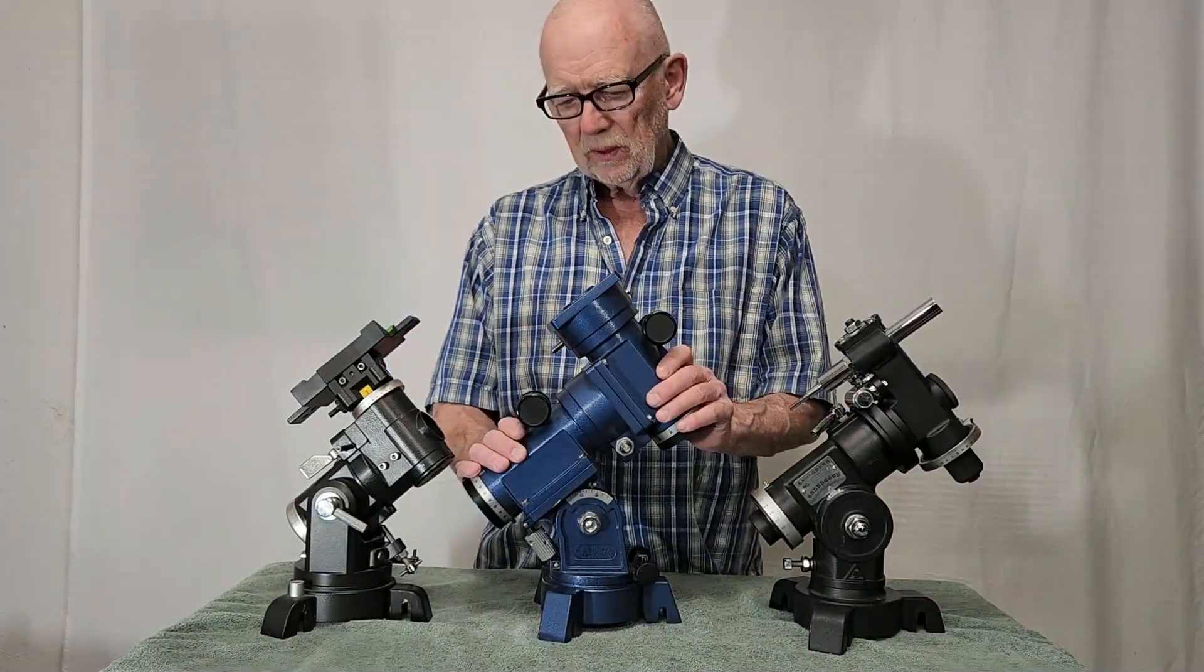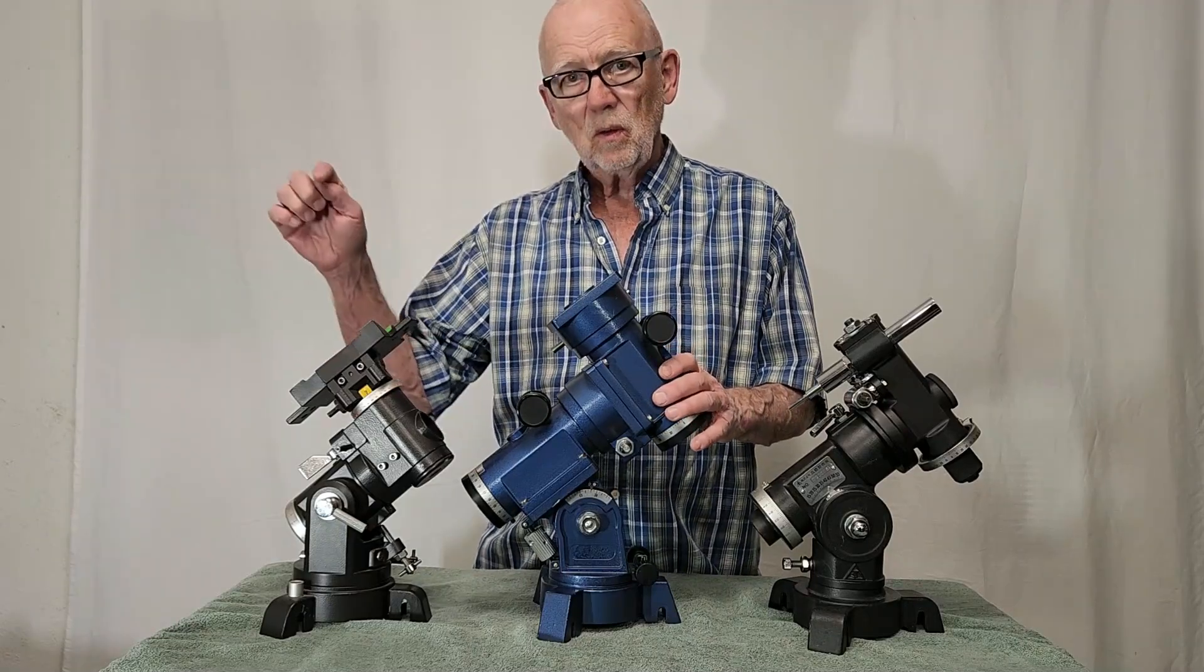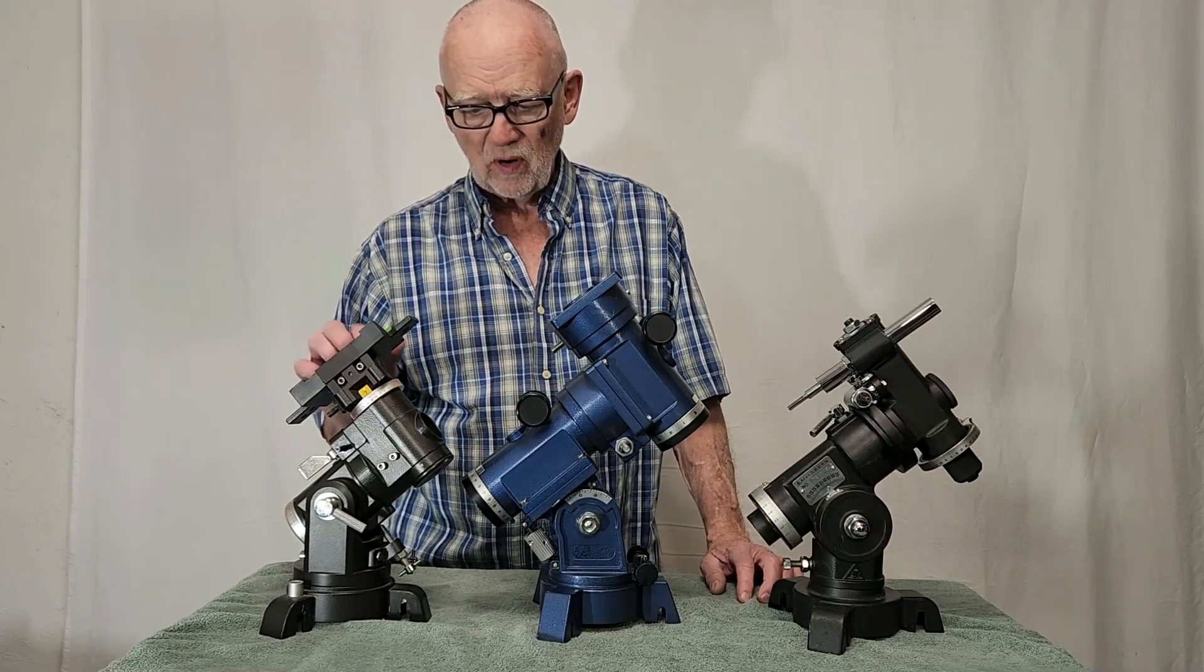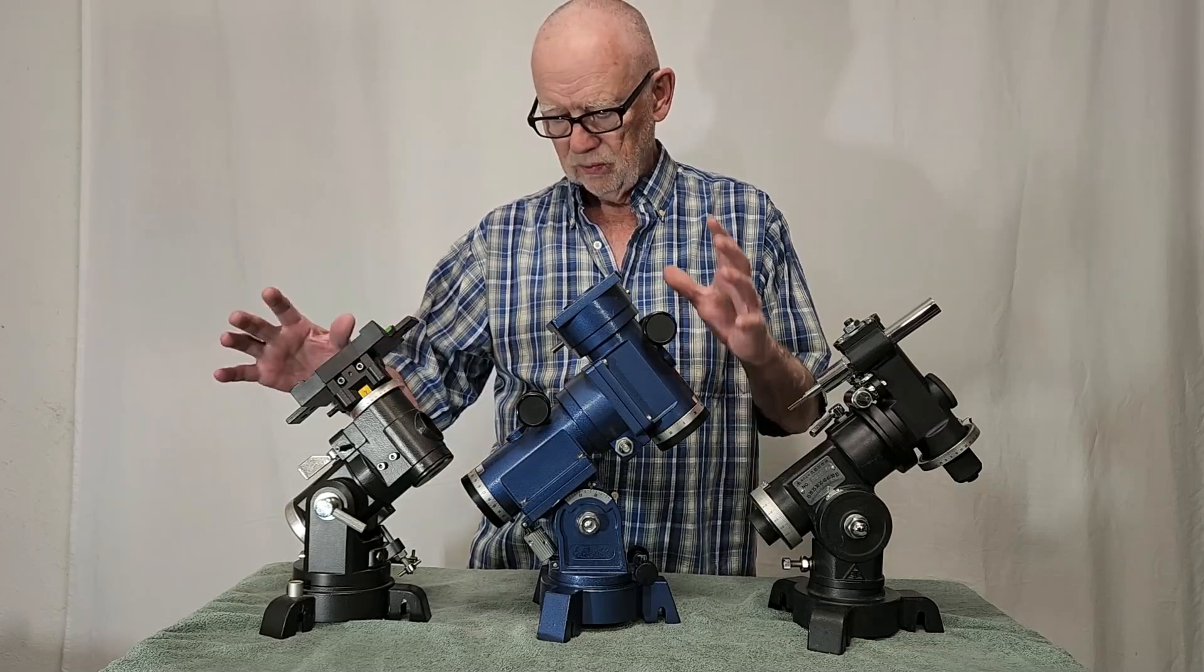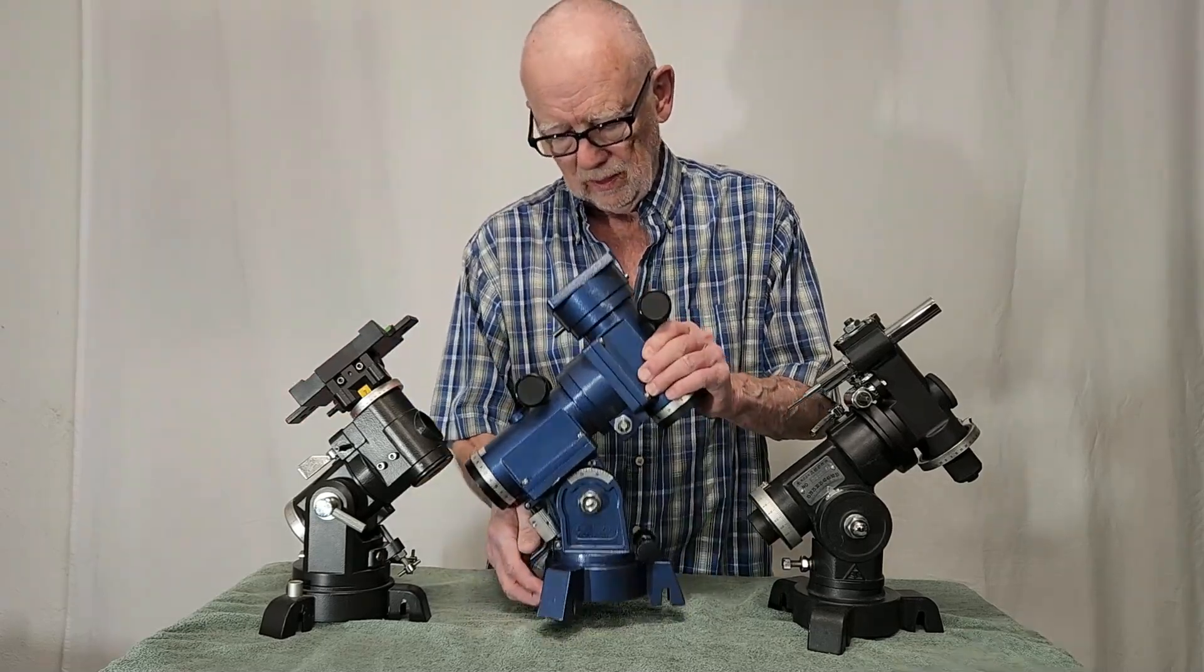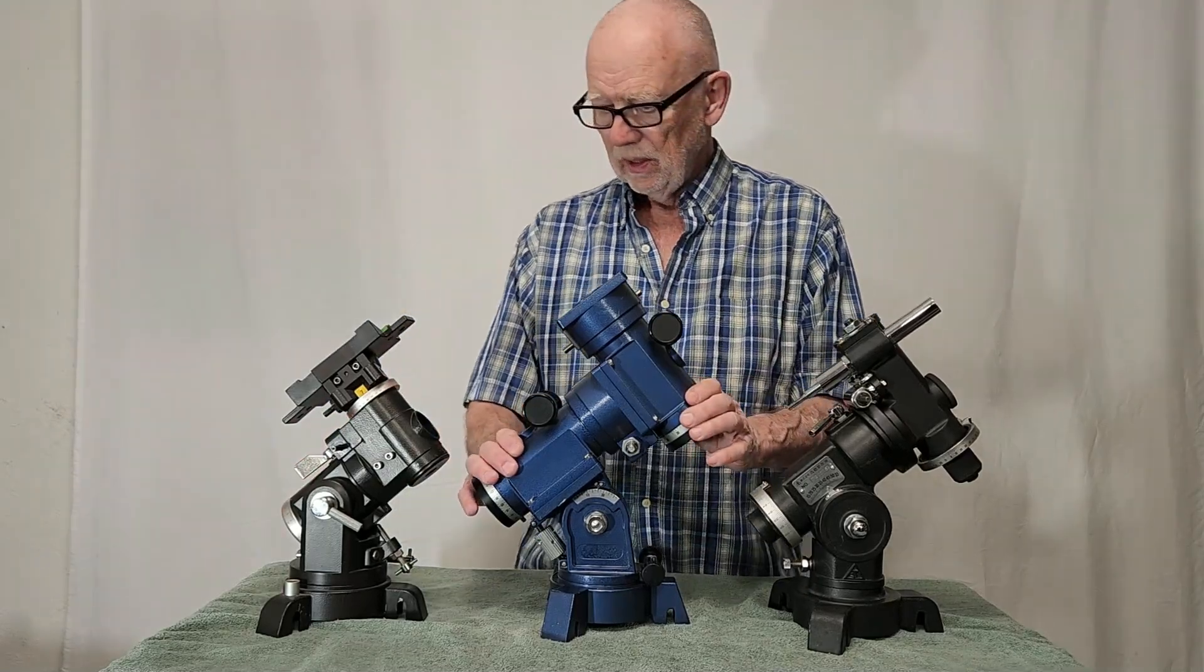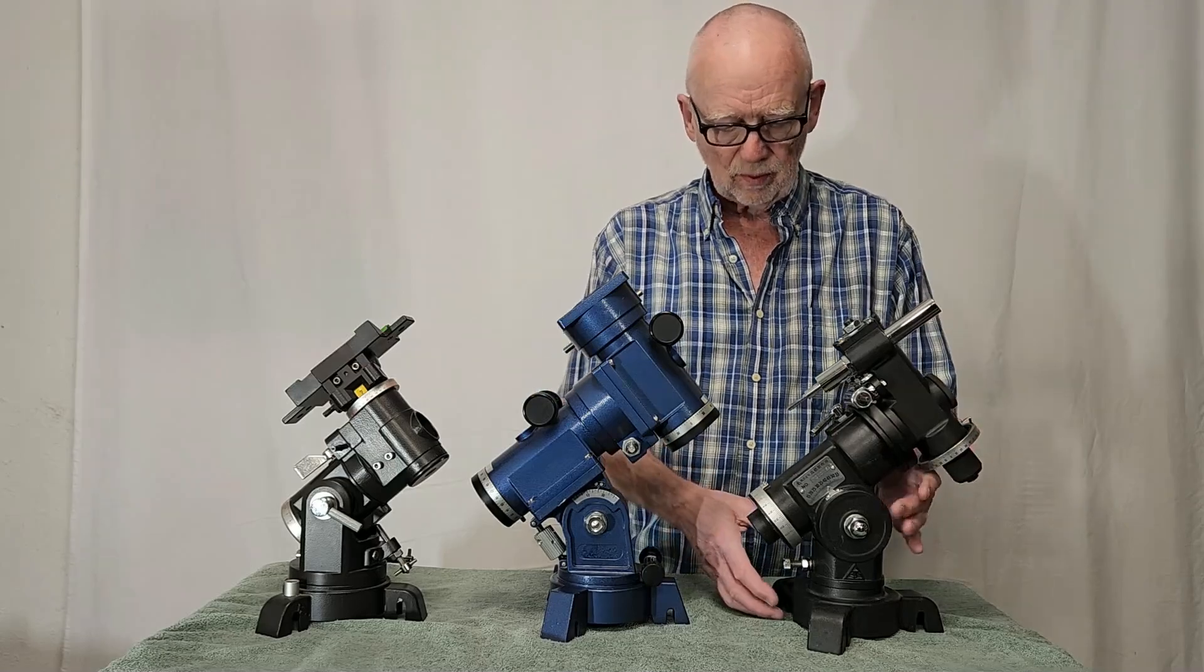Here's the carton mount in comparison to two other mounts. This is the Vixen Polaris. They put pretty big telescopes. I think they put a four-inch refractor on this mount. The carton just overwhelms it. It's just about, oh, it's at least twice as much in terms of weight. And in terms of strength, probably a lot more than that.